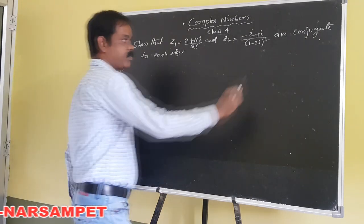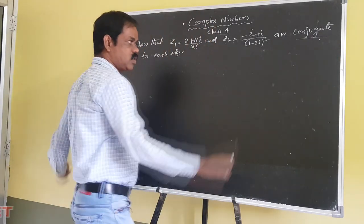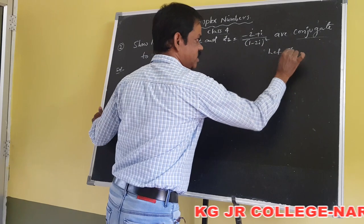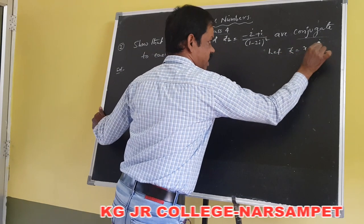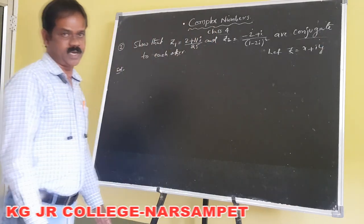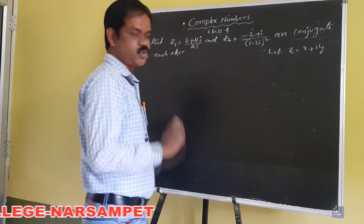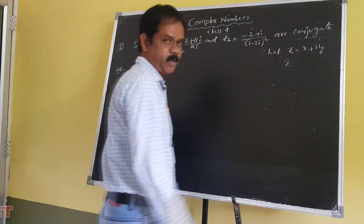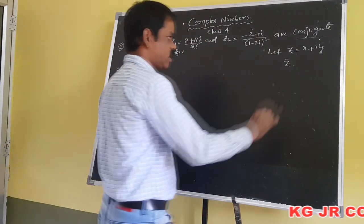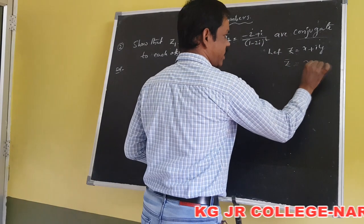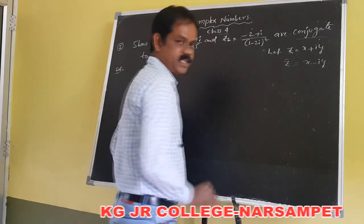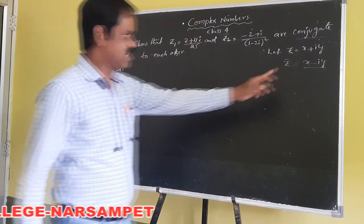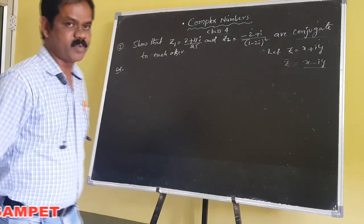What is the concept of conjugate? Conjugate means — for example, let us consider z equals x plus iy to be a complex number. Its conjugate is denoted by z bar. z bar is equal to x minus iy. So x minus iy is the conjugate of this complex number. Using this concept, you can solve this problem easily.